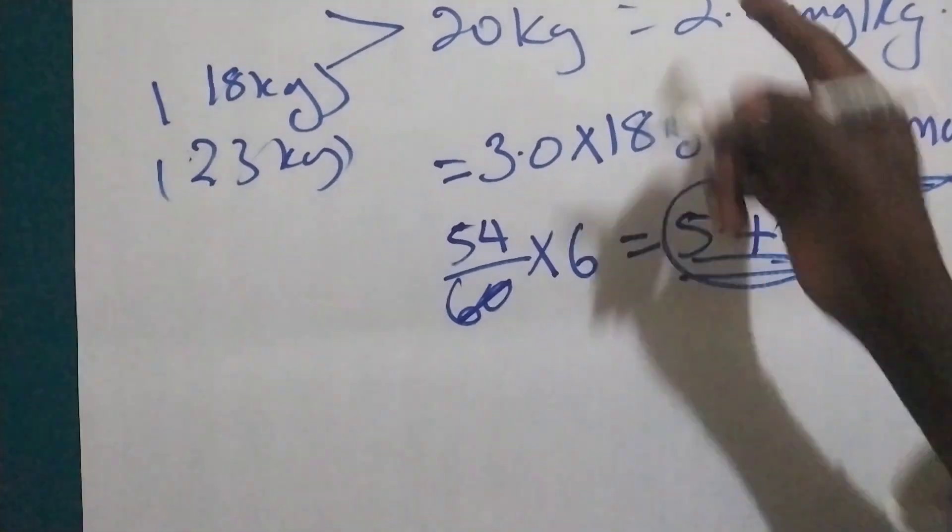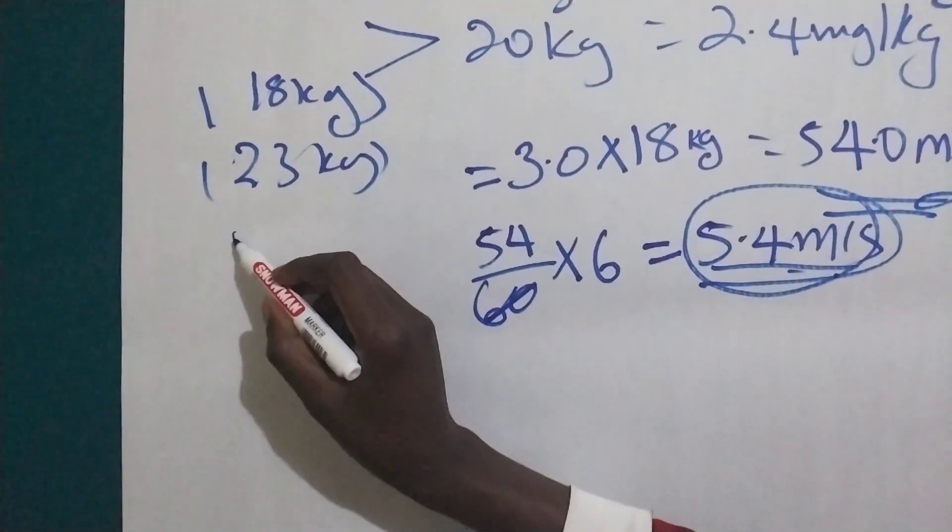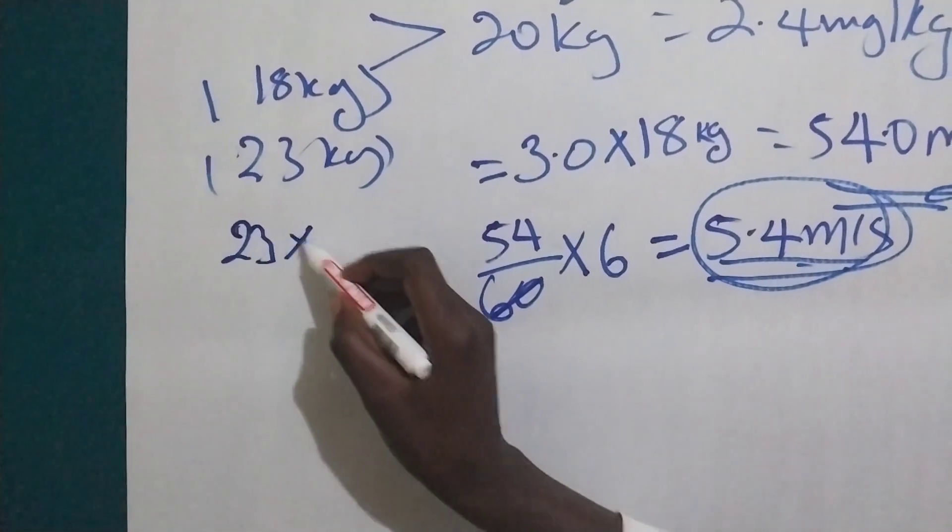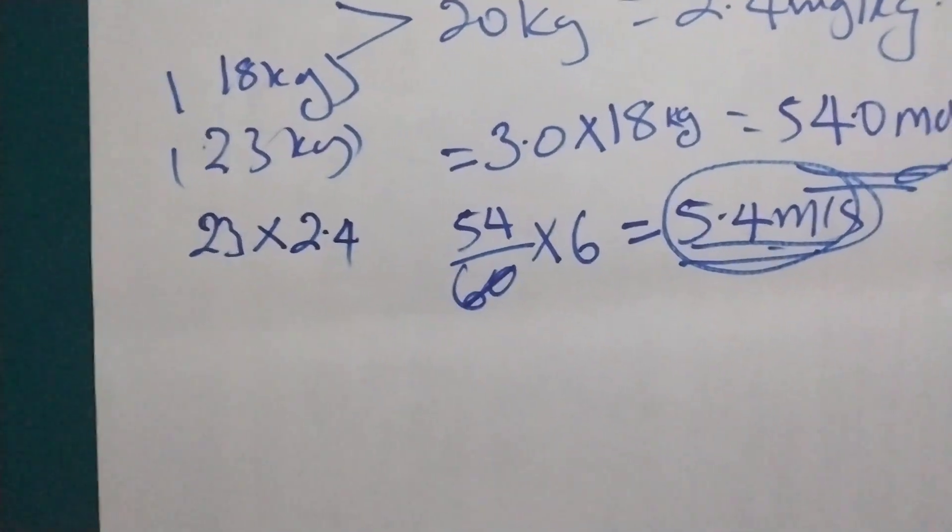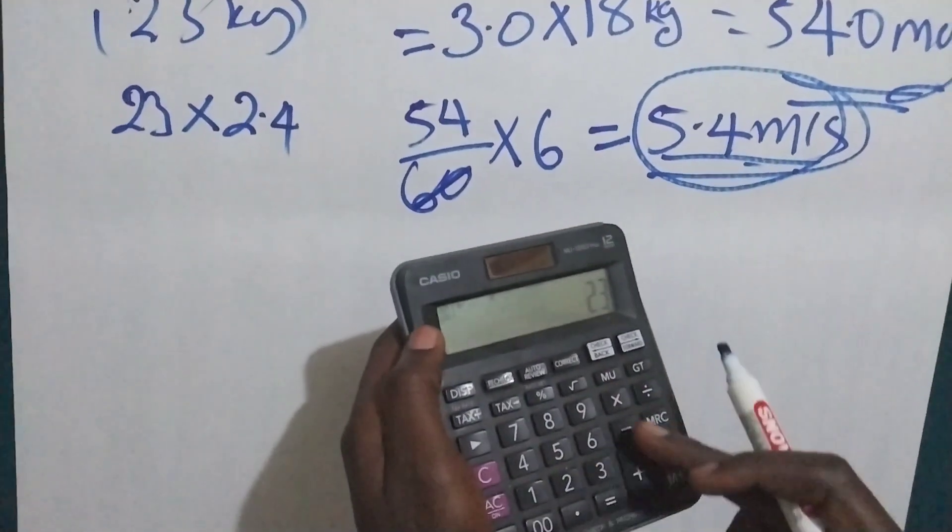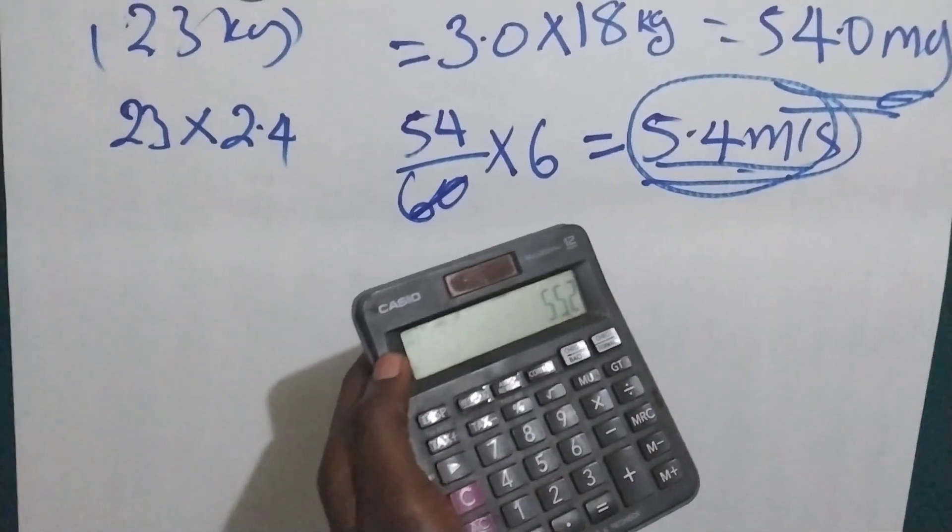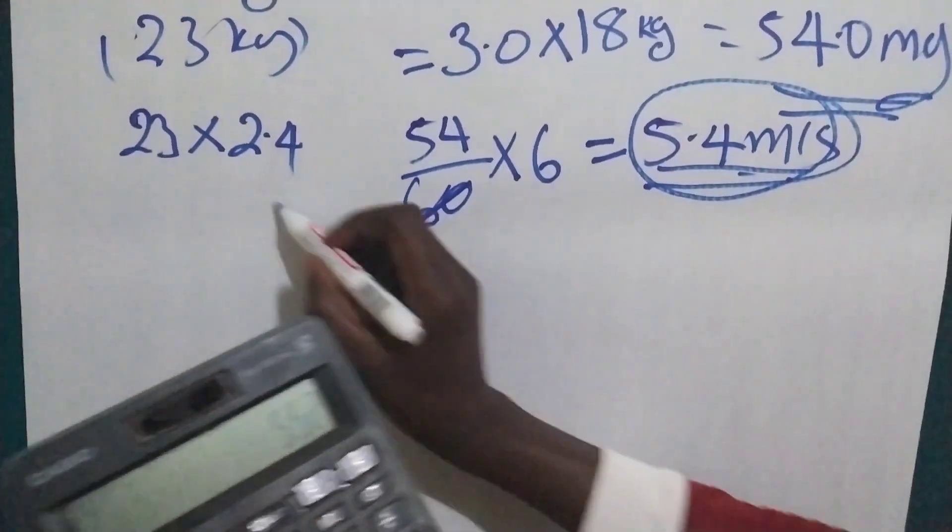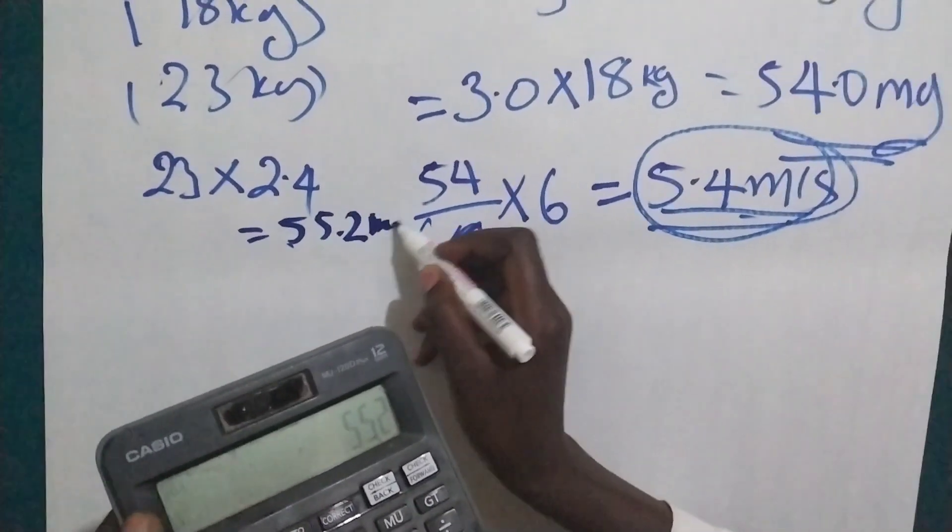Even for this one, it is the same. You are going to multiply 23 times 2.4. Let's see what we will get. 23 times 2.4, we are going to get 55.2. So it will give us 55.2 milligrams.